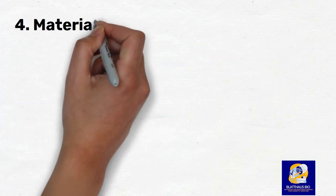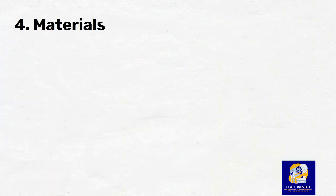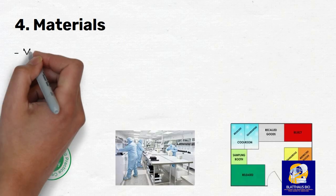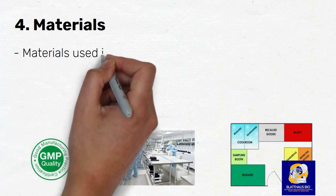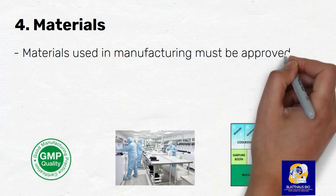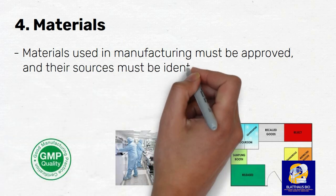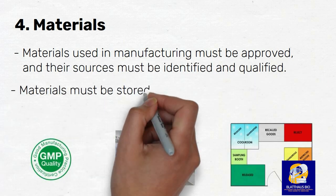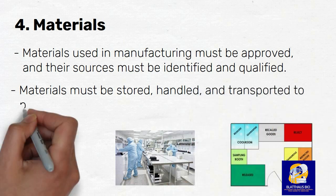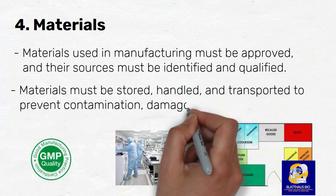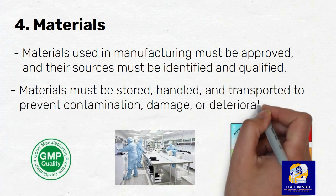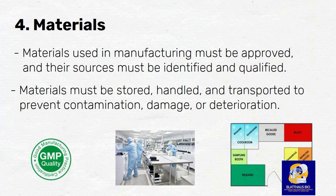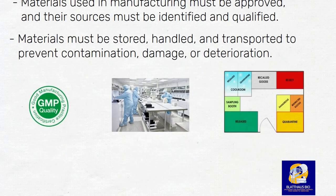Number 4: Materials. The fourth principle of GMP is the control of materials used in manufacturing. Materials used in manufacturing must be approved and their sources must be identified and qualified. Materials must be stored, handled, and transported to prevent contamination, damage, or deterioration. Examples of materials include raw materials, packaging materials, and labeling materials.